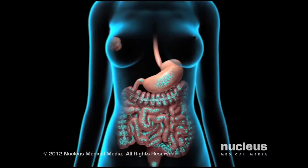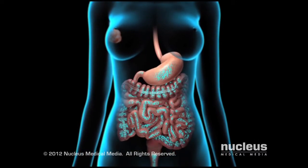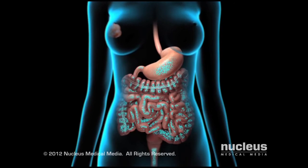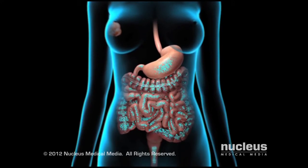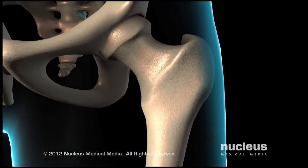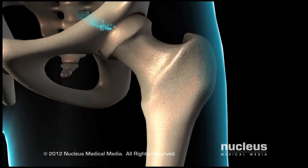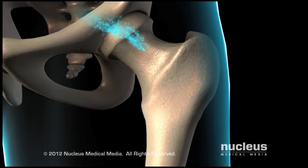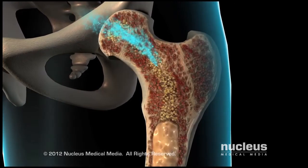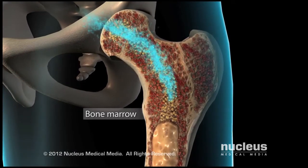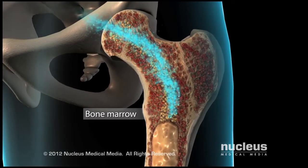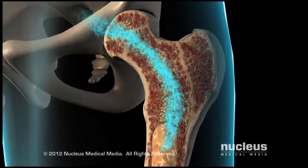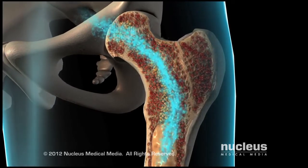Unfortunately, chemotherapy drugs cannot tell the difference between fast-growing normal cells and cancer cells. As a result, these drugs also damage or irritate some of your fast-growing normal cells, such as those in your bone marrow, digestive system, and hair follicles.